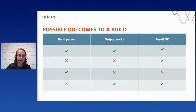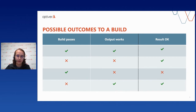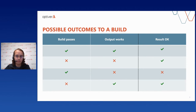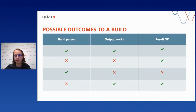Before talking about practical things, let's consider the possible outcomes to a build process. There are generally four outcomes — a table of two variables with two values each. The first and second outcomes are where build results and output health match: either the build fails and the output also fails, or the build passes and the output works. Either of these is totally fine from the perspective of the build itself.